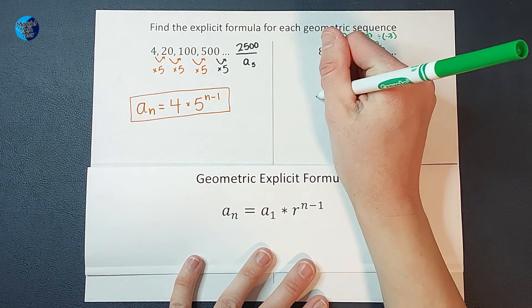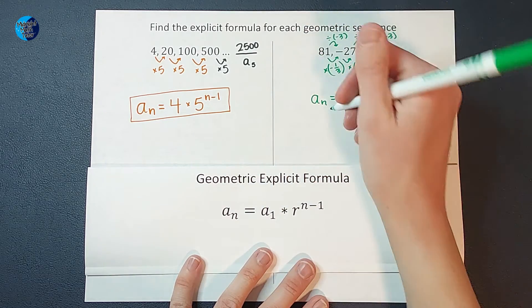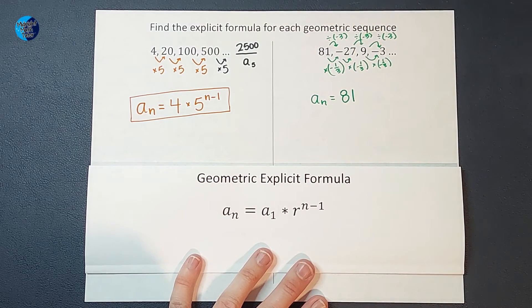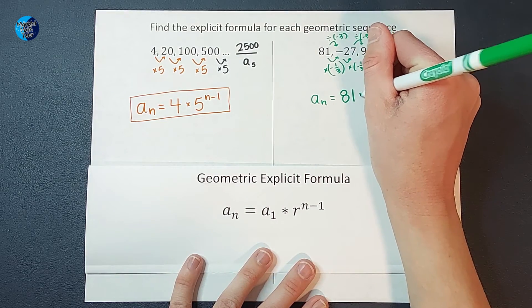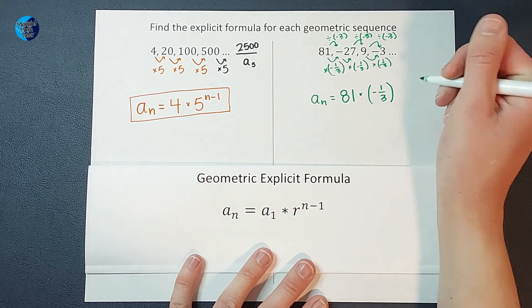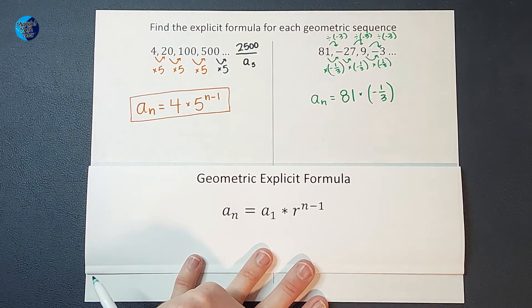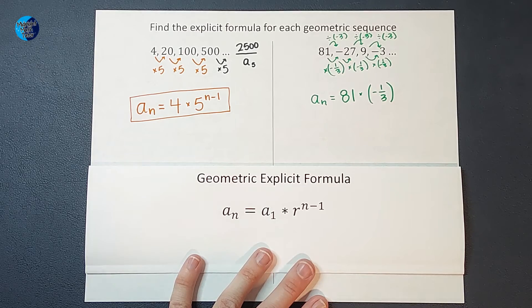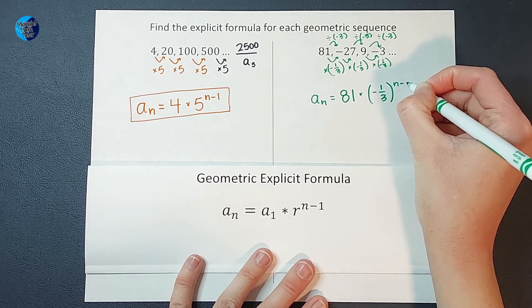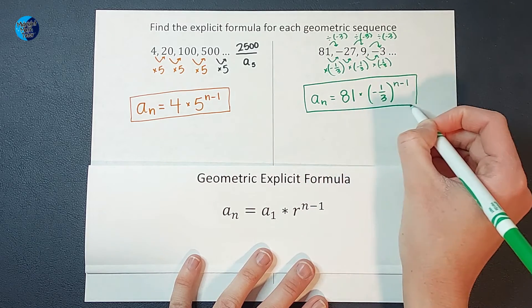All right, so how do I apply that to my explicit formula? Well, I say whatever number you want to find, take the first number in your sequence. In this time, it is 81. And then what are we doing? We are multiplying by a negative 1 3rd, but how many times? If I multiply by it once, I get the next term. But if I want the 50th term, I need to multiply by it 49 times. So the way to say that in math language is to the power of n minus 1. And that is what that formula looks like.